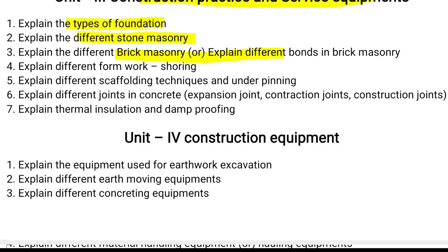Next in unit three: different forms of shoring, scaffolding techniques, and underpinning are important questions. Then different types of joints in construction — expansion joints, contraction joints, and construction joints. Finally, thermal insulation and damp proofing. These are all very important questions in unit three.